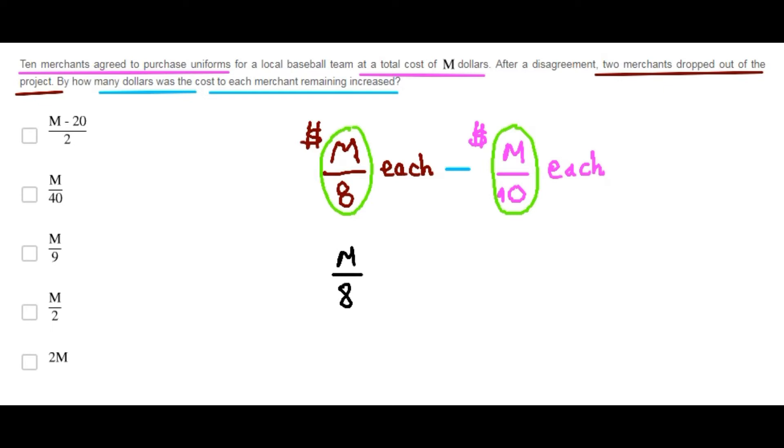Finally, M over 8 minus M over 10 is equal to - here I will multiply by 5 over 5 and here I will multiply by 4 over 4 in order to get the same denominator, 40.